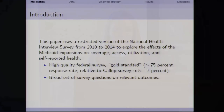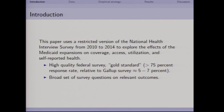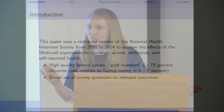In our paper we're using a restricted use version of the National Health Interview Survey from 2010 to 2014, and we're looking at how these Medicaid expansions affected coverage, access, utilization, and self-reported health among the low-income population in states that did and did not choose to expand Medicaid. The NHIS is a very high quality federal survey with a very high response rate — greater than 75% — compared to, for example, the Gallup data at something in the five to seven percent range. It also asks about a large set of questions on topics we might expect health insurance to affect.